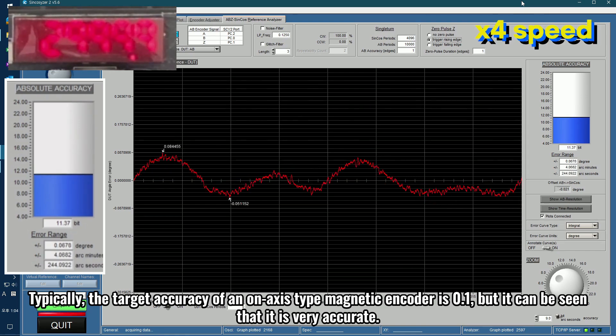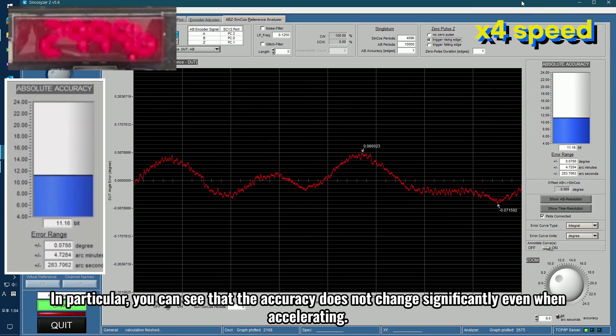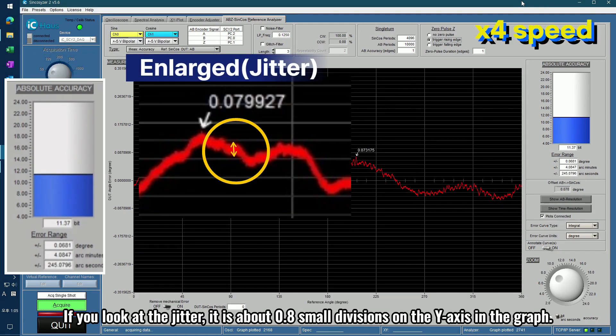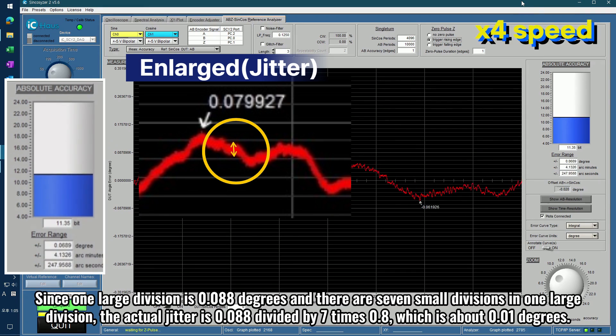Typically, the target accuracy of an on-axis type magnetic encoder is 0.1, but it can be seen that it is very accurate. In particular, you can see that the accuracy does not change significantly even when accelerating. If you look at the jitter, it is about 0.8 small divisions on the y-axis in the graph. Since one large division is 0.088 degrees and there are 7 small divisions in one large division, the actual jitter is 0.088 divided by 7 times 0.8, which is about 0.01 degrees.